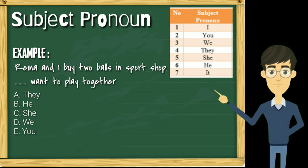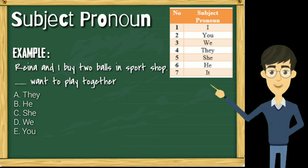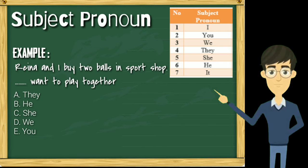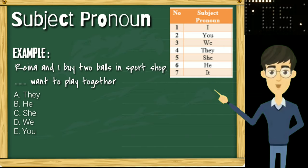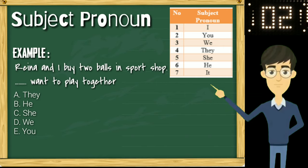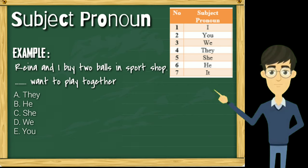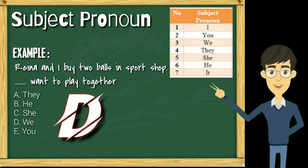Bagaimana jika kalimatnya seperti ini? 'Reina and I buy two balls in a sports shop. ..., want to play together.' Pada kali ini kalimatnya ada dua. Untuk melengkapi kalimat kedua, kita lihat dulu siapa subject yang dimaksud di kalimat pertama. Jika ada pilihan jawaban A: they, B: he, C: she, D: we, E: you — apakah jawaban yang tepat? Ya, 'we'. Karena Reina dan saya itu adalah kami, maka 'we' adalah jawaban yang tepat.